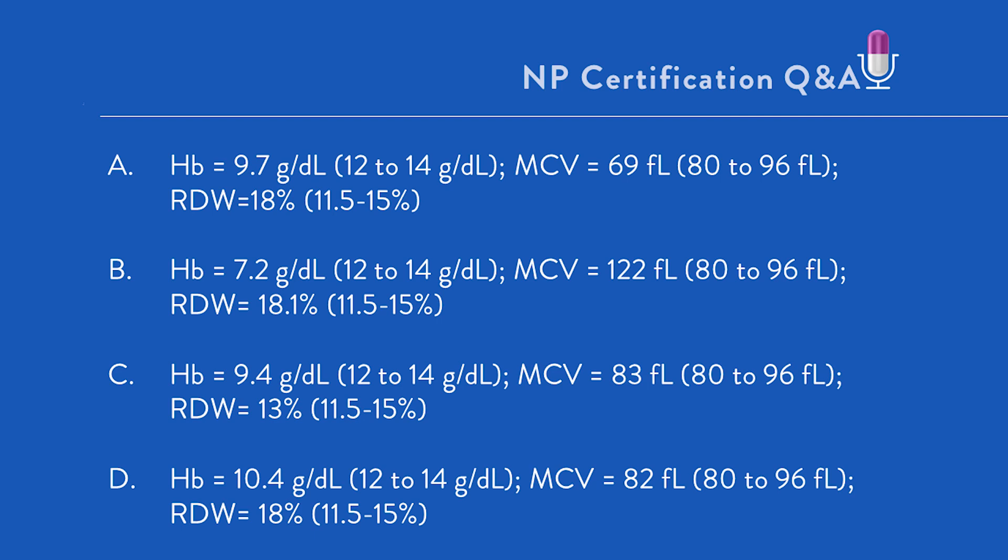Option C: hemoglobin 9.4, MCV 83, so that's within normal limits, that's a normocytic anemia. If an anemia is normocytic, it will also be normochromic. RDW 13%, telling us that new cells and old cells are roughly the same size.